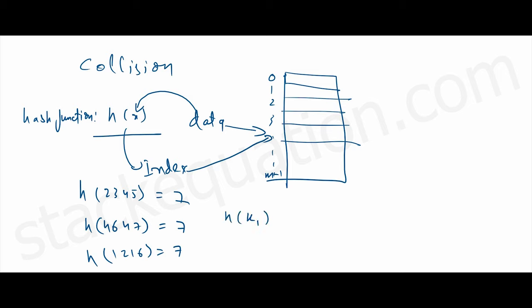So for multiple values if it's returning the same index, that is what we call a collision. When for multiple data values a hash function returns the same index, that is called a collision.